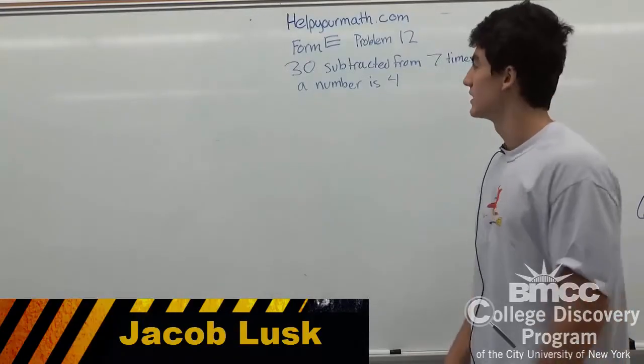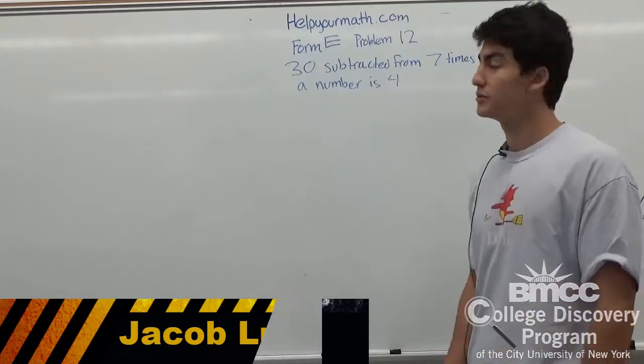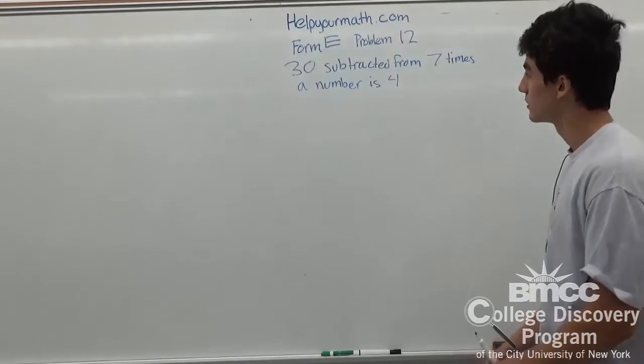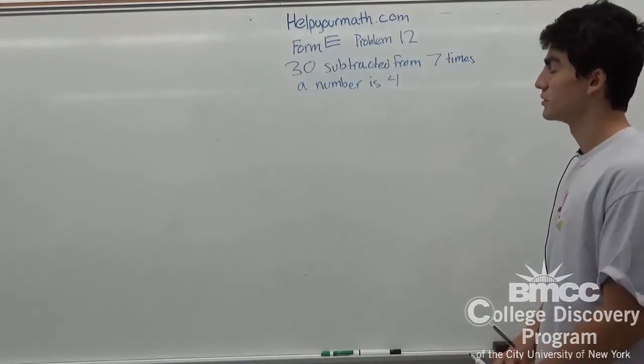Welcome to HelpYourMath.com. In this tutorial, I'll show you how to do Problem 12 on Form E, which is a word problem that states, 30 subtracted from 7 times the number is 4.